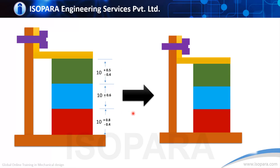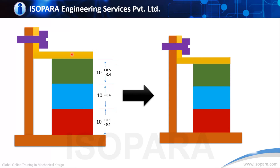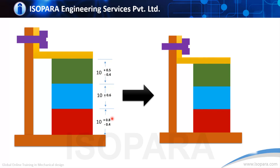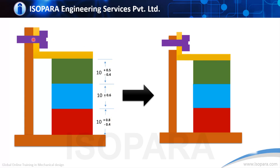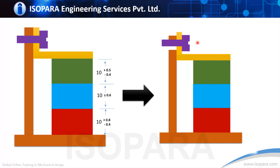Consider another problem where three blocks are kept one above the other with their individual tolerances. These three blocks are held together by means of an L-shaped bracket, which is clamped to the frame. If we consider the variation of the blocks and drill holes in both the L-shaped bracket and the frame, we cannot assemble the part because the variation of these blocks will not allow the L-shaped bracket to pass the bolt through the hole of the frame.